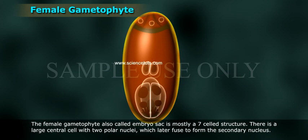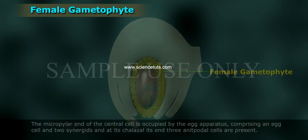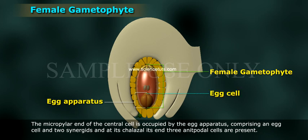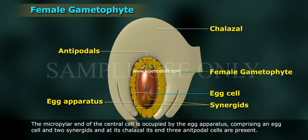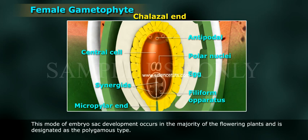The female gametophyte, also called the embryo sac, is mostly a seven-celled structure. There is a large central cell with two polar nuclei which later fuse to form the secondary nucleus. The micropyle end of the central cell is occupied by the egg apparatus, comprising an egg cell and two synergids, and at its chalazal end, three antipodal cells are present. Cells of the egg apparatus and the antipodal cells are uninucleate and haploid, whereas the central cell is binucleate or diploid. This mode of embryo sac development occurs in the majority of flowering plants and is designated as the Polygonum type.